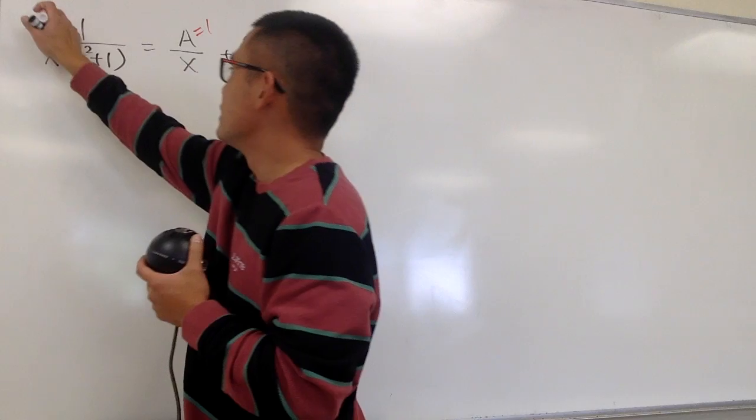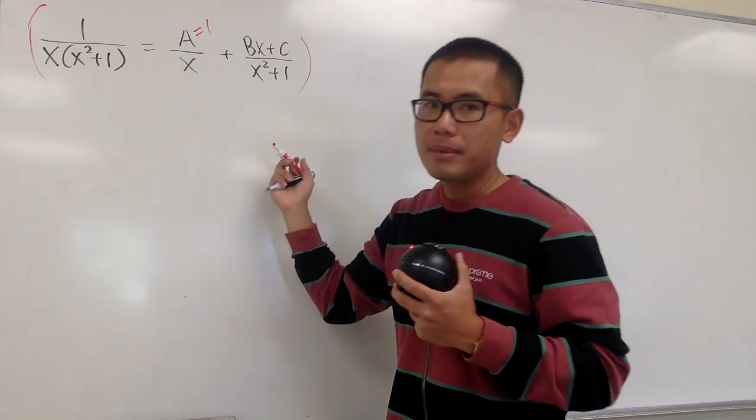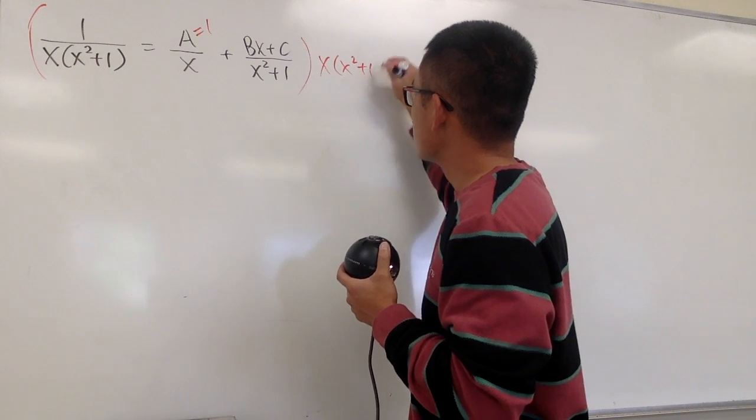So, to continue this, let's go ahead, multiply everything by the lowest common denominator, which is just the x times x squared plus 1,